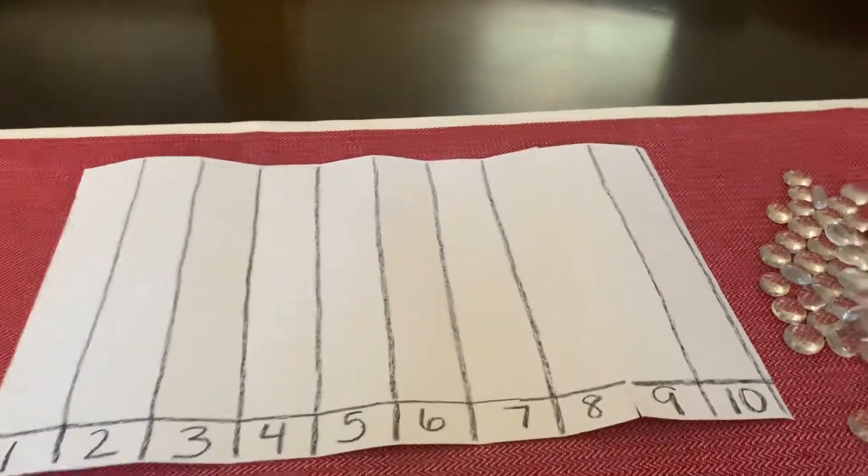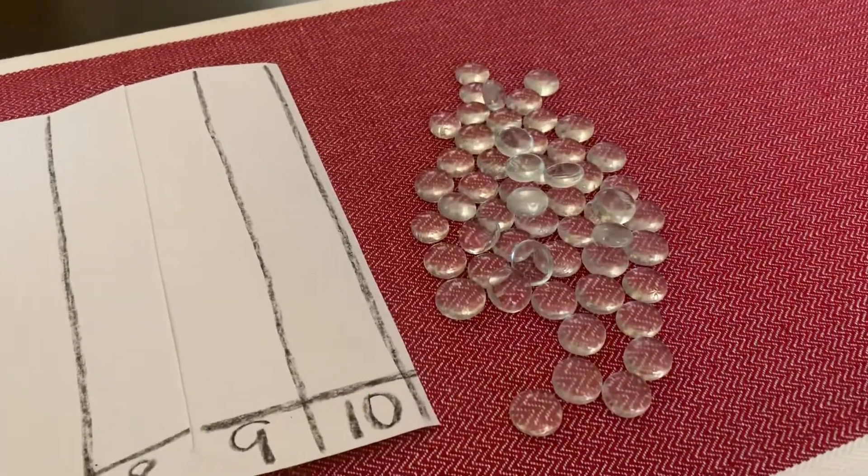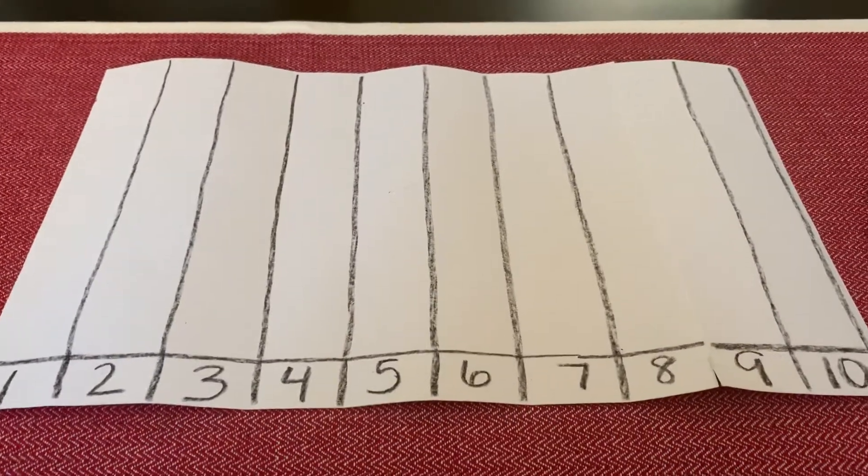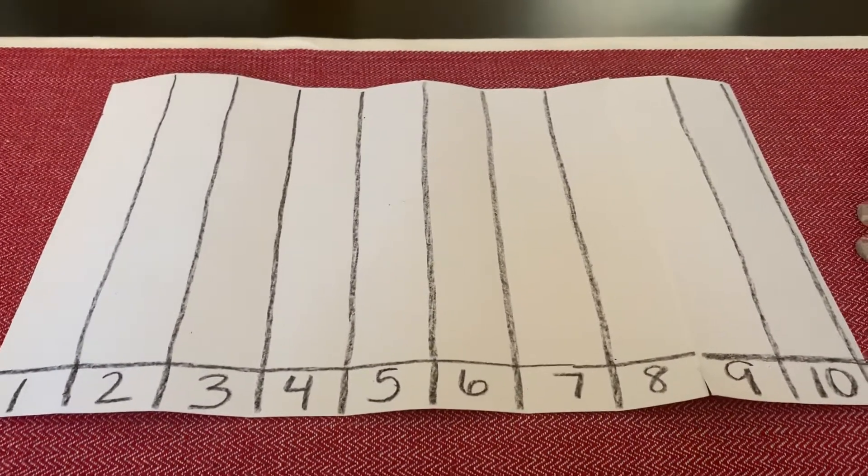So what we are going to do is I have these clear jewels over here. We are going to count them and we are going to put them in the proper column that belongs with the numbers.